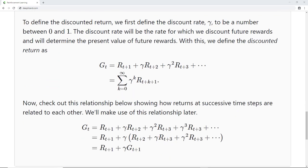To define the discounted return, we first define the discount rate, gamma, to be a number between 0 and 1. The discount rate will be the rate for which we discount future rewards, and it will determine the present value of future rewards. With this, we define the discounted return, G sub t, to be the sum of the discounted rewards at each time step.